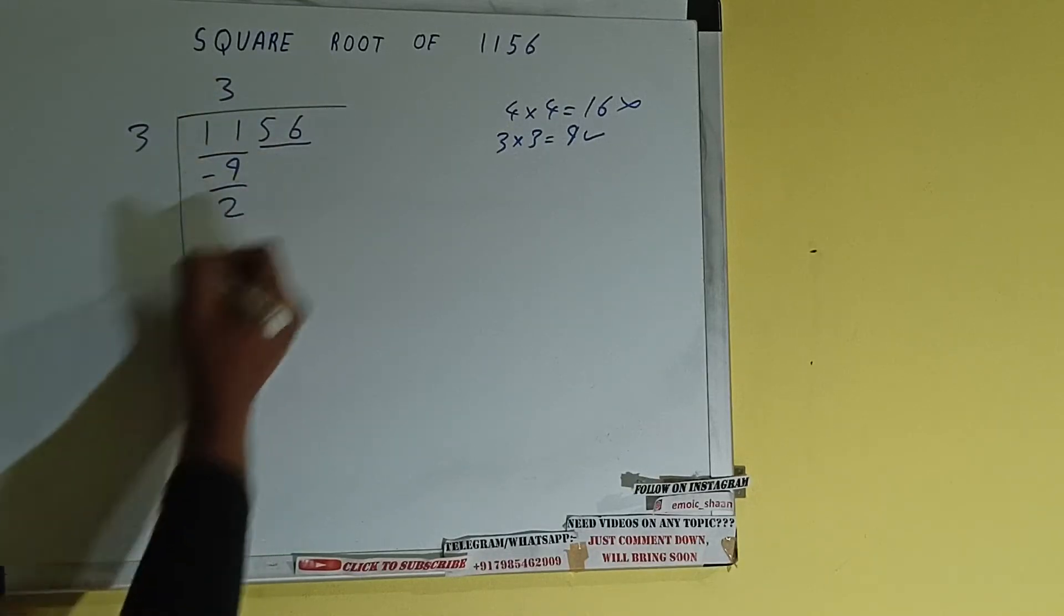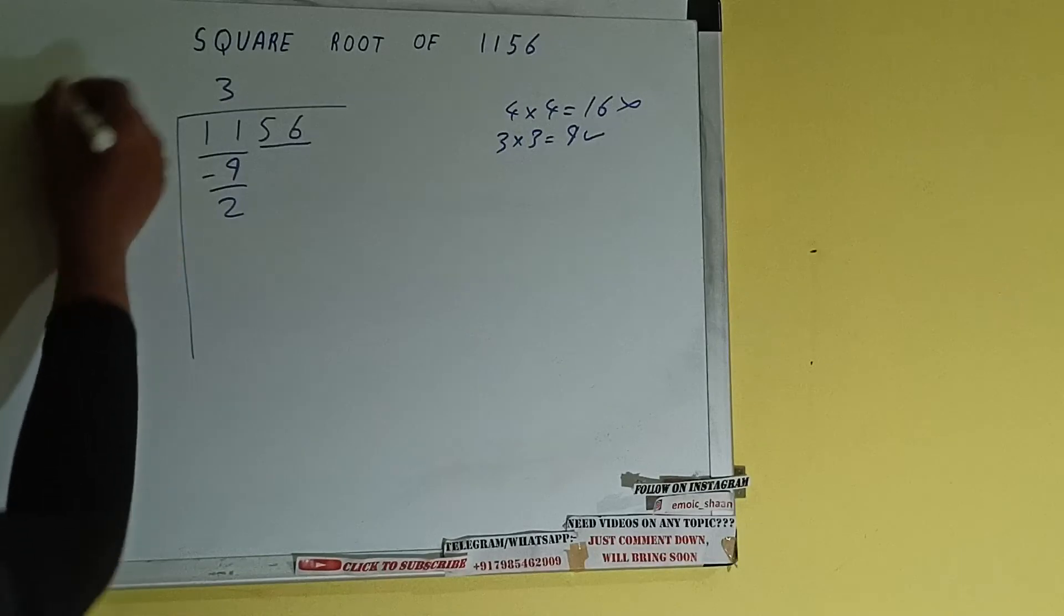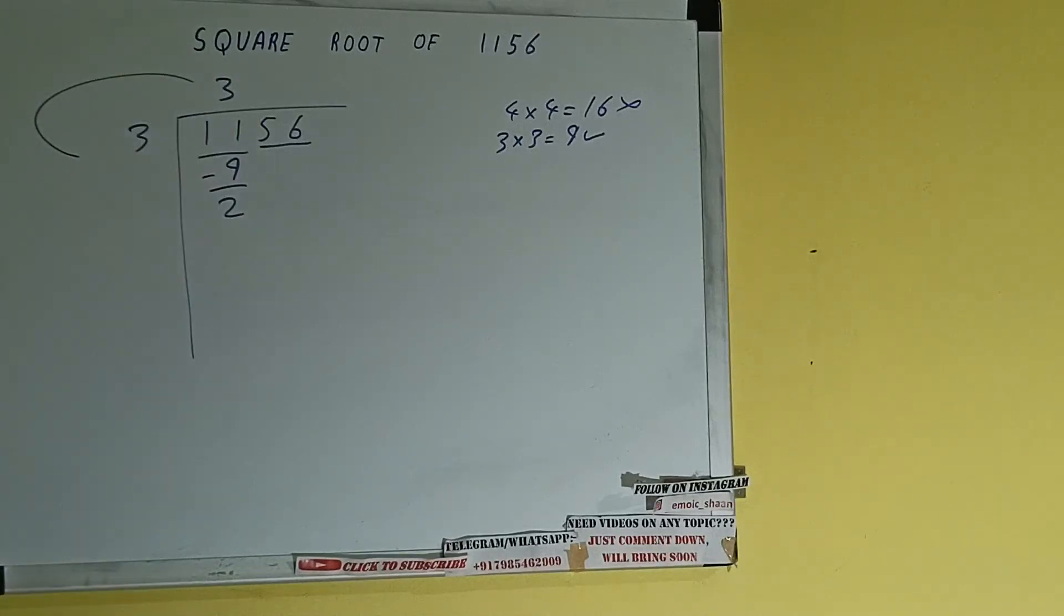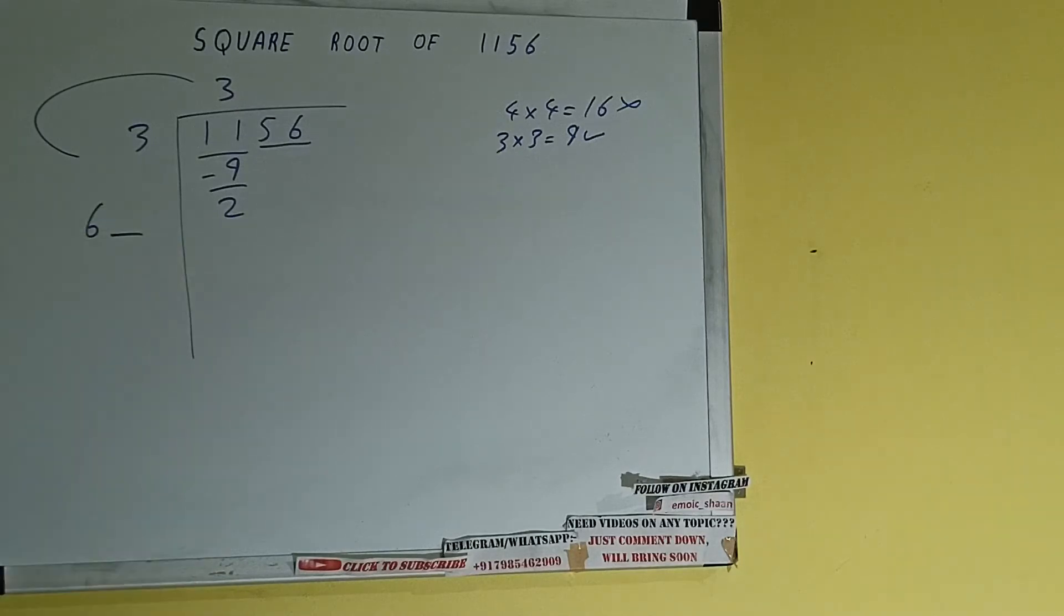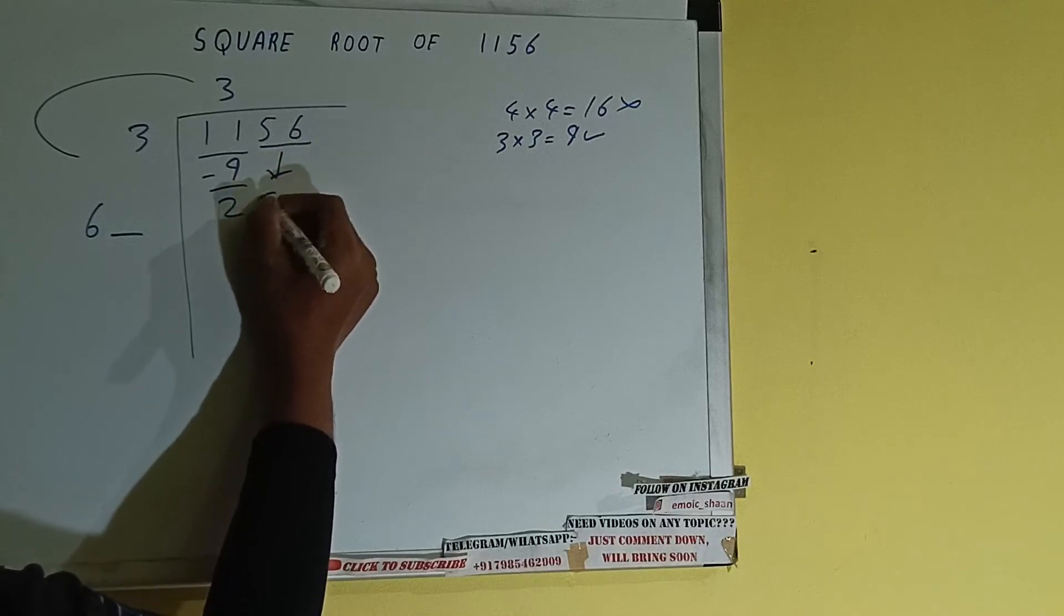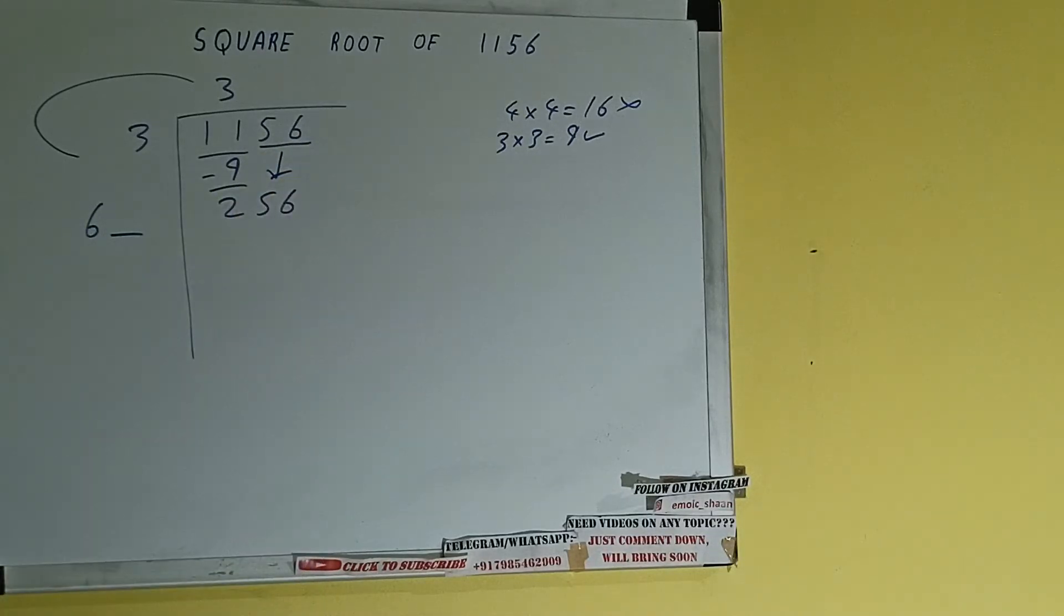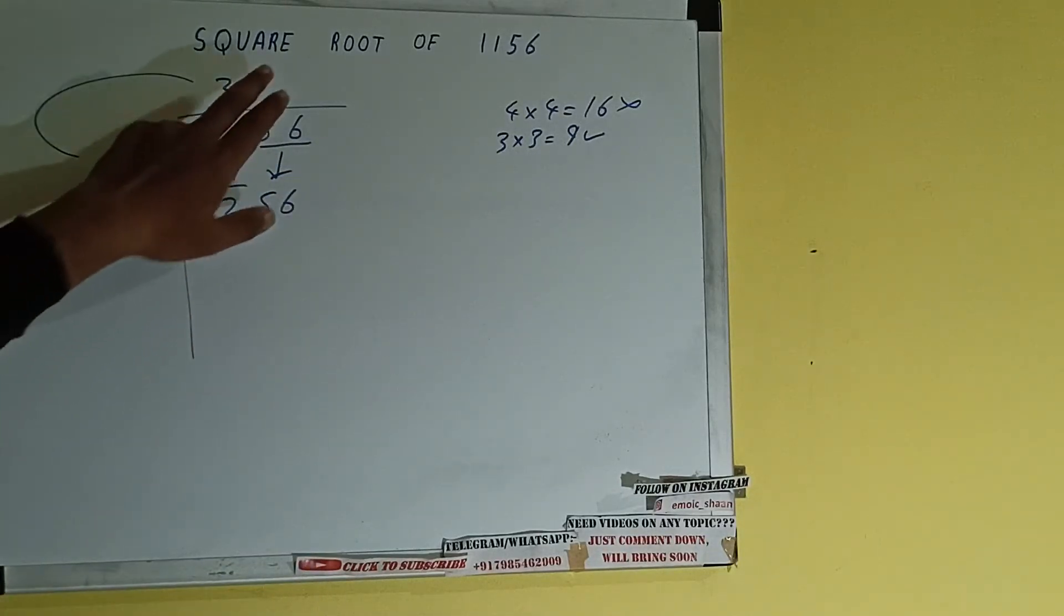9 subtracted, 2 will be left. Now 3 into 3, so add both. 3 plus 3 will be 6. Write it here and keep a digit extra. And this number we need to make it big, so bring the next pair down and it will be 256.